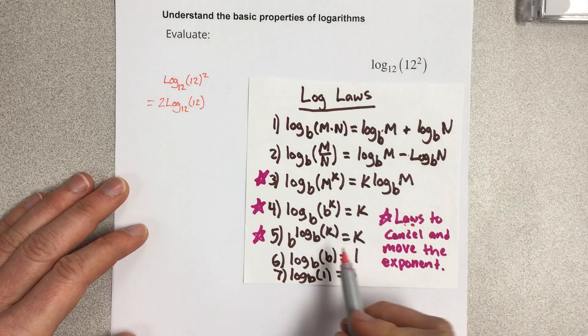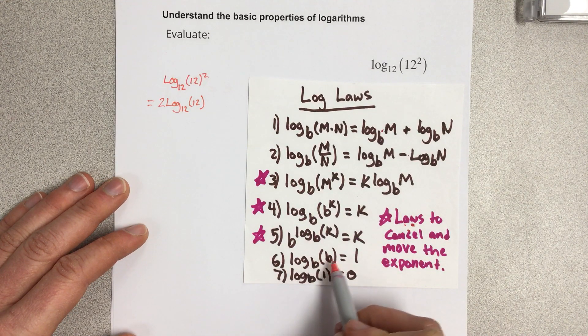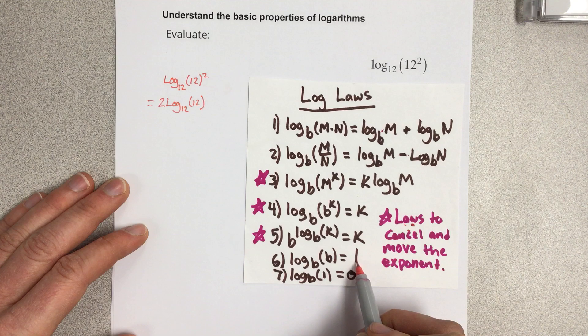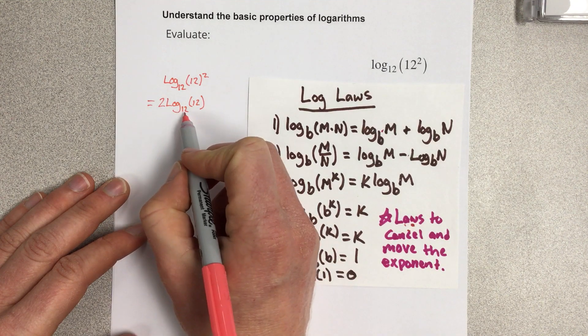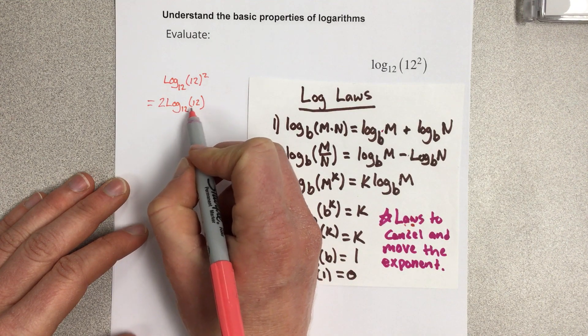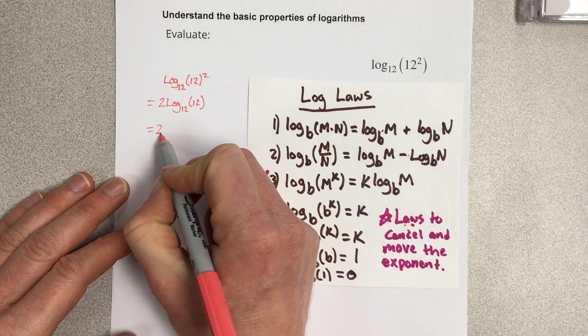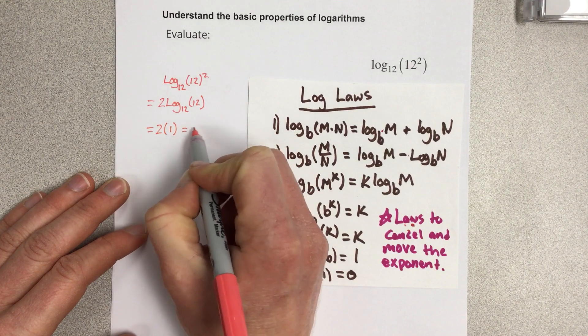And then I can look at this cancellation law that says log base b of b is equal to 1. So I have log base 12 of 12, which is the same as b of b. So I end up with 2 times 1, which is 2.